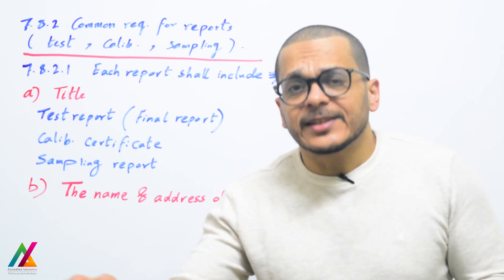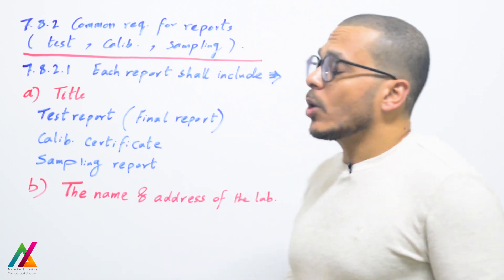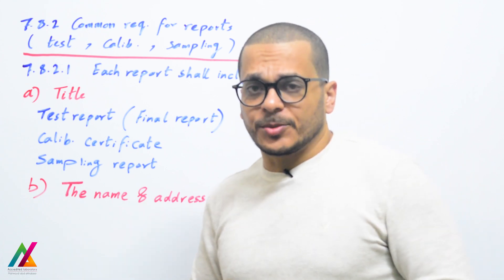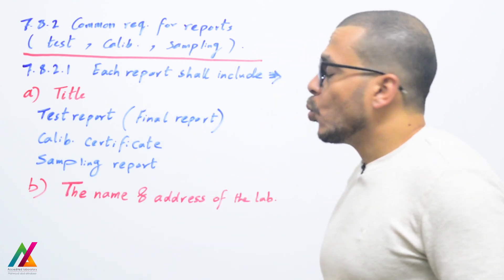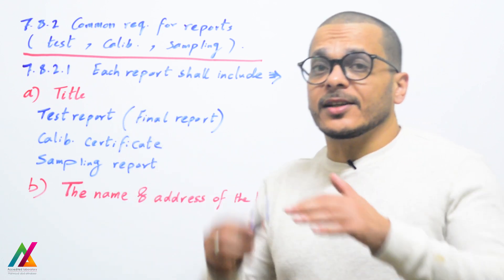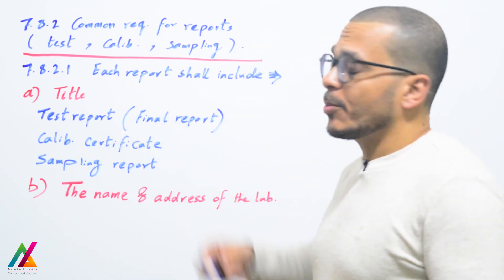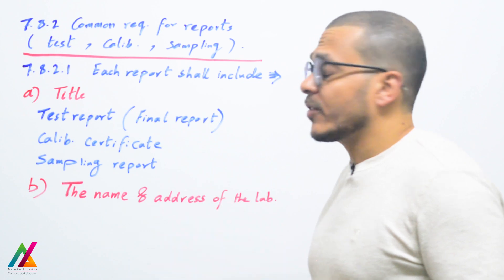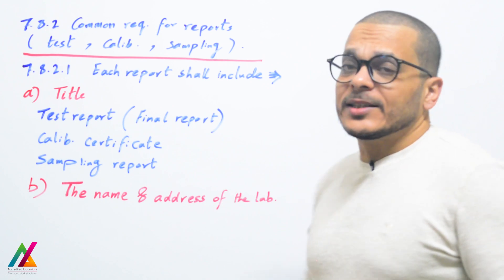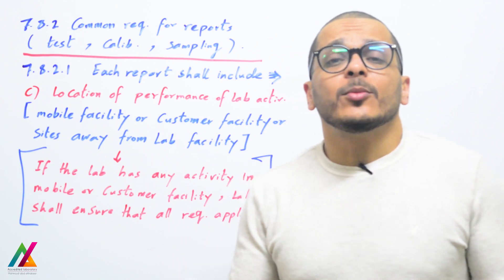We have common requirements for reports: test reports, calibration certificates, and sampling reports. Clause 7.8.2.1 states that each report shall include the following: a title at the beginning — whether it is a test report, calibration certificate, or sampling report — the name and address of the lab, and also the location where the lab activity was performed.